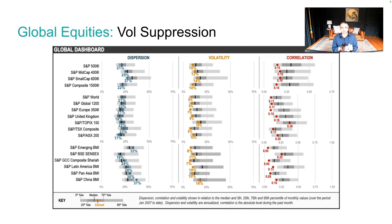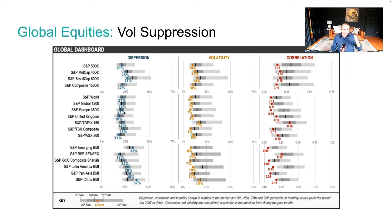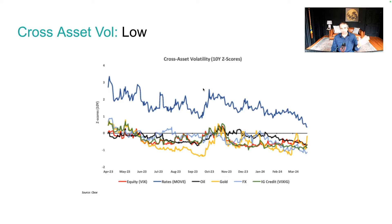Interestingly, the vol suppression is not just in US markets — you can see it really across the globe. This is from S&P Global. Volatility is very low, correlation very low, dispersion readings lower in some other markets than in the S&P 500. There's a real uniformity to these measures across the globe. Cross-asset, gold vol is spiking a little recently, but oil, rates, and credit vol is very low.